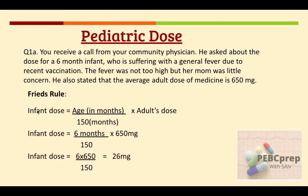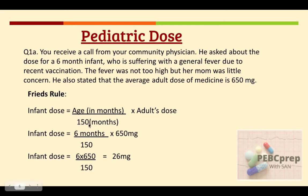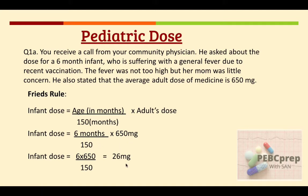For Fried's rule, the formula is: infant dose equals age in months multiplied by adult dose, divided by 150. We use 150 because we assume the adult is 12.5 years old, and 12.5 years equals 150 months. Putting in the values: 6 months × 650 milligrams ÷ 150 gives us 26 milligrams as the infant dose.